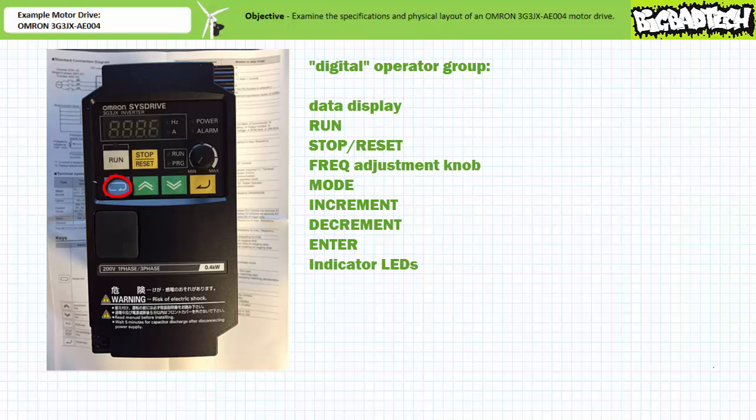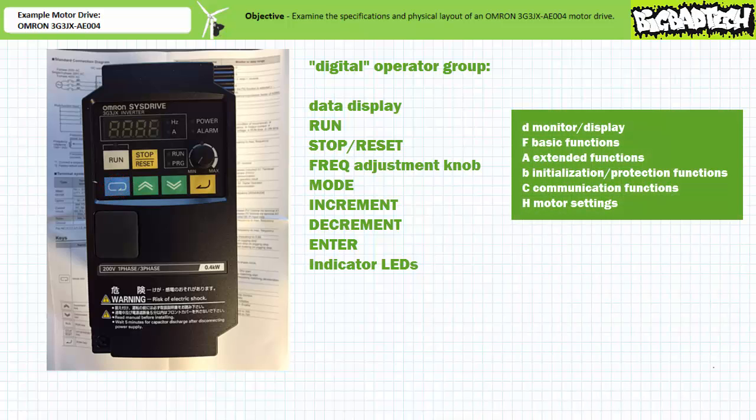The mode button switches between different functions: monitor or display functions preceded by a D, basic functions preceded by an F, extended functions preceded by an A, initialization and protection functions preceded by a B, communication functions preceded by a C, and motor settings preceded by an H. We'll come back to explain various elements of these different modes when we learn to program this motor drive.